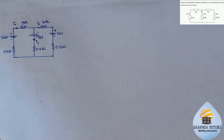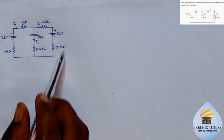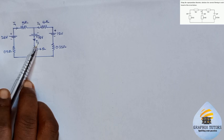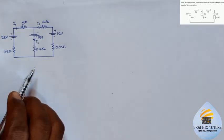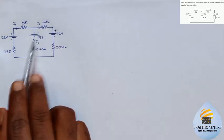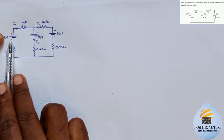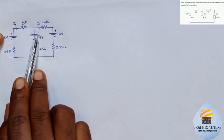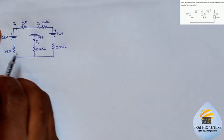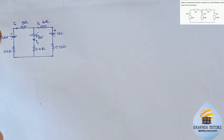Now the first thing we'll do — we want to know each branch current: I1, I2, and I3 using the superposition theorem. Step one states that if you have two or more sources, you short circuit each of those sources leaving one in operation at a time. Since I have three sources, I'll short circuit two and leave one in operation, cycling through each. So I'm going to short circuit the 18 volt source and the 12 volt source.